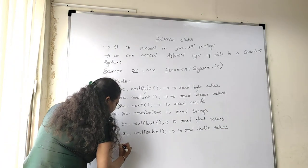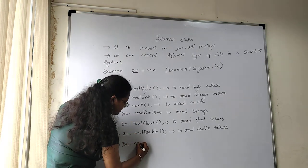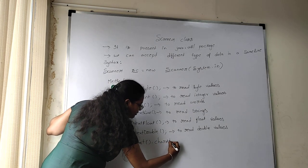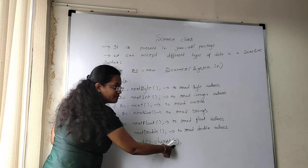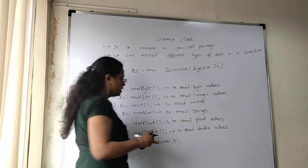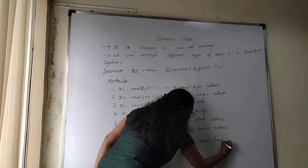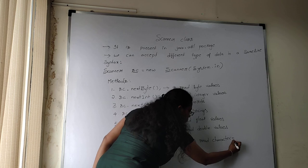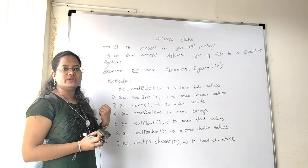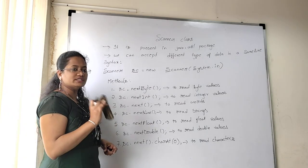When you want to take a single character from the keyboard, use `sc.next().charAt(0)`. Here, zero is the index position — at index zero, whatever character you have, that character is taken from the keyboard. These are all the methods to accept data from the keyboard. Now let's implement a program for Scanner class.